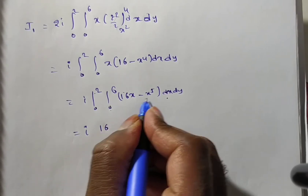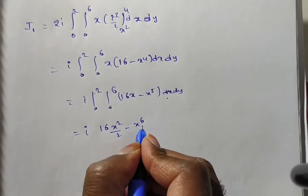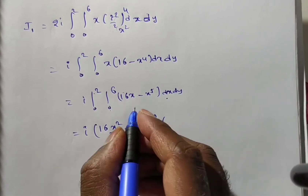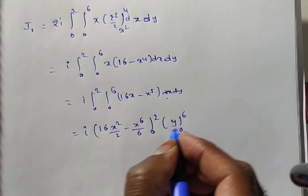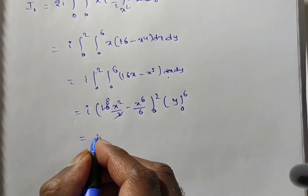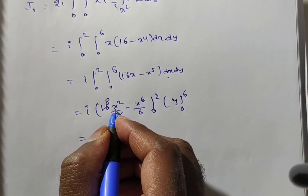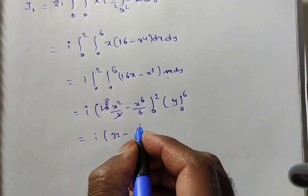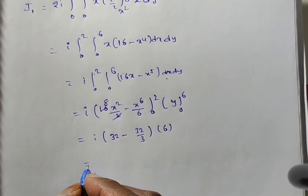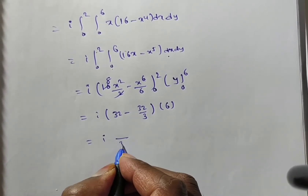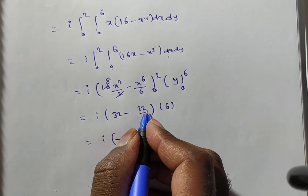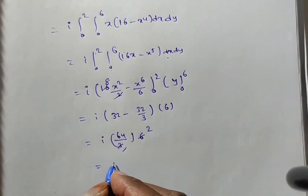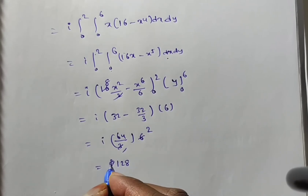Substituting the upper limit x=2: 4×(2²) = 8×2 = 16 for the first term, and 2⁶/6 = 64/6 for the second. Simplifying: 2×(32) minus (32/3) times 6. This gives 128·i for integral one, so I1 = 128i.